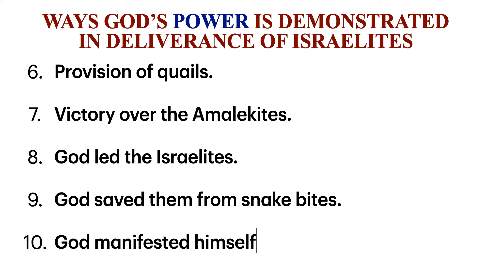Number ten, during the making of the covenant at Mount Sinai, God manifested himself physically. On the third day, Moses took the Israelites to meet their God. God manifested his presence in the form of thunder, lightning, earthquake, and a thick cloud that covered the whole mountain. There was also a loud trumpet blast that made the people tremble. Moses went up the mountain and was given the Ten Commandments, showing that God had power because he manifested himself.